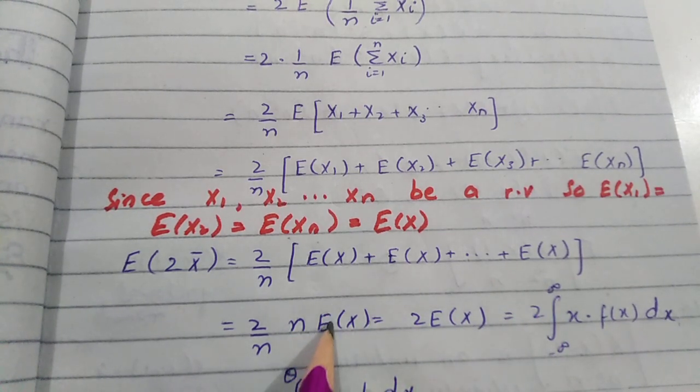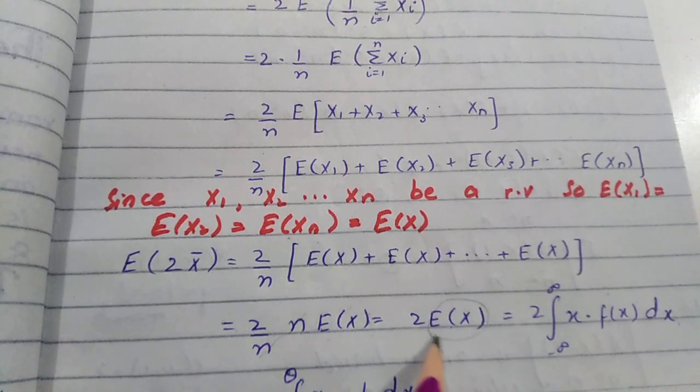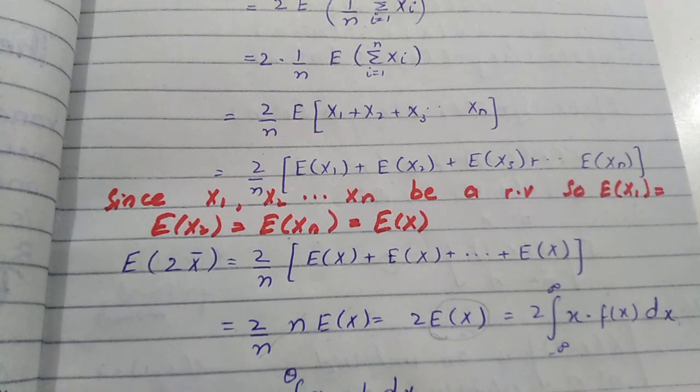We have written n and expected value of X. Here we have canceled this term. Now, the expected value of X is the mean. The question asked for the mean term. Now, expected value of X—you know how to open this term. We have limits, the integral. We also have f(x) and dx.